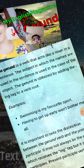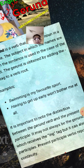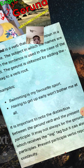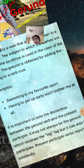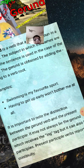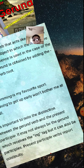For example: 'Swimming is my favorite sport.' 'Having to get up early won't bother me at all.' It's important to know the distinction between the gerund and the present participle — it may not always be the gerund which receives the ING ending, but it can also be a participle. Present participle verbs report continuous action.